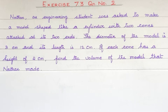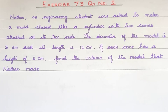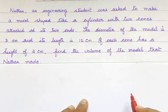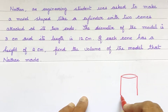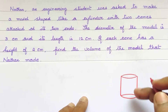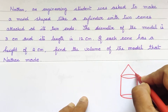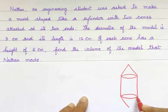An engineering student named Nathan was asked to make a model shaped like a cylinder with two cones attached at its two ends. The shape of the model is a cylinder with two ends, and at each end a cone is attached. If you draw a diagram, the first shape is a cylindrical model with two cones on each side — this is the model.